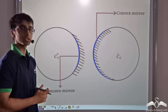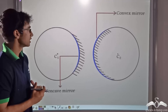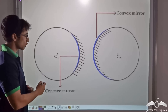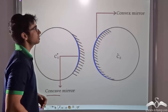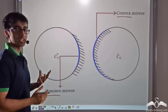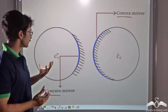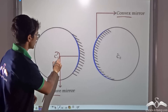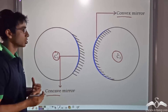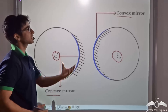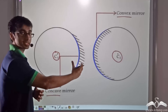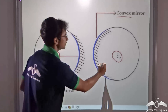Look at the two pictures being shown on the board. You see that two spheres have been shown. In case of the first sphere, a concave mirror has been depicted, and in case of the second sphere, a convex mirror has been depicted. These spheres have a particular centre associated with them. For the first sphere, the centre is C1, and for the second sphere, the centre is C2. The concave mirror and the convex mirror have been made out of these two spheres, which have respective centres at C1 and C2.